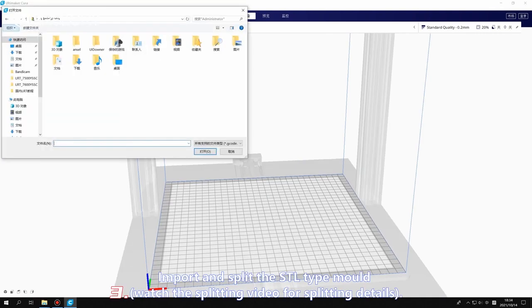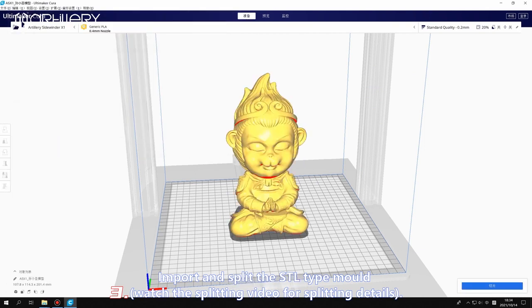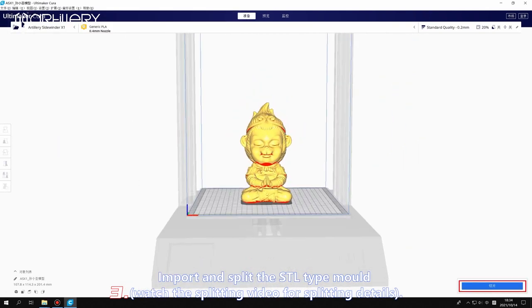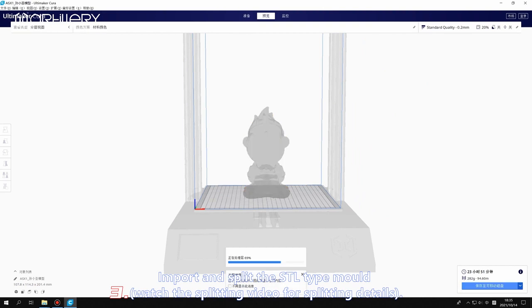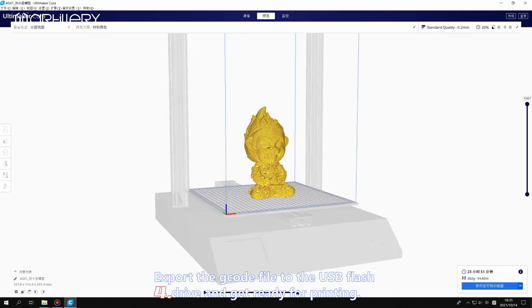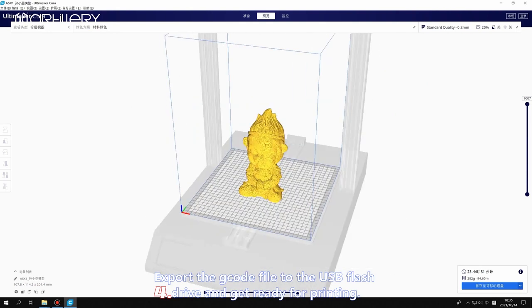Import and slice the STL type model. Watch the slicing video for slicing details. Export the G-code file to the USB flash and get ready to print.